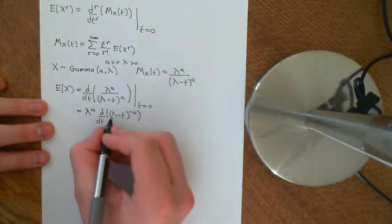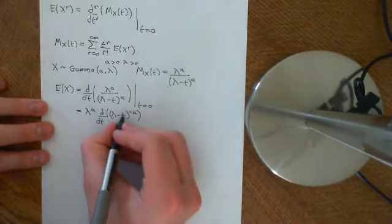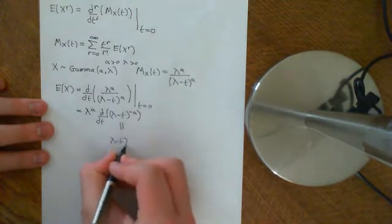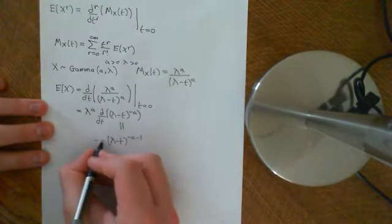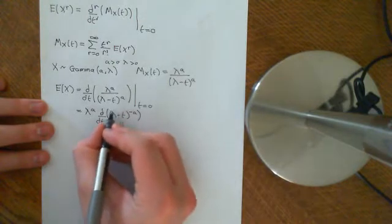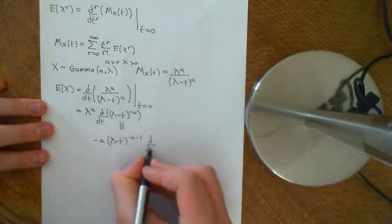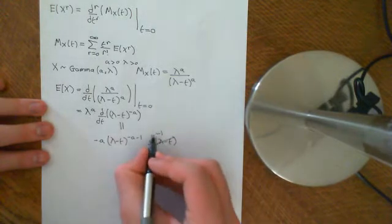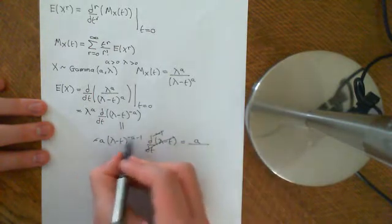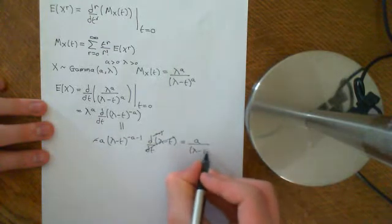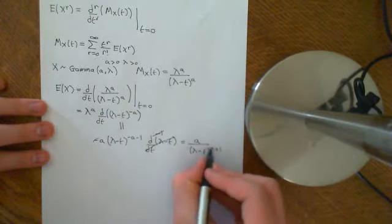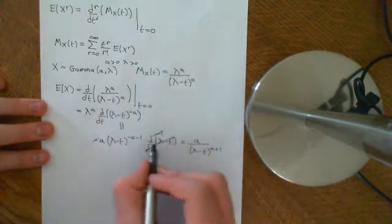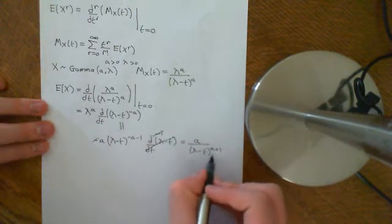Now how do you do derivatives like this? You apply the chain rule — view (λ minus t) as a single variable, and it's to the power of negative a. We lower the power by 1, multiply through by the old power which is negative a, and then differentiate what's inside: the derivative of (λ minus t) with respect to t is just minus 1. So that minus and that minus cancel, and we get a over (λ minus t) to the power of a plus 1.